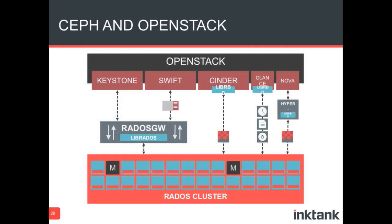This is an overview of how Ceph and OpenStack integrate. The RADOS Gateway is the integration point for Keystone and Swift, allowing object storage inside RADOS in a way that integrates with OpenStack. On the block side, Cinder, Glance, and Nova integrate with the RADOS Block Device to allow storage of volumes, snapshots, and disk images inside Ceph, and to boot off them in a way that reads from many storage nodes at once.